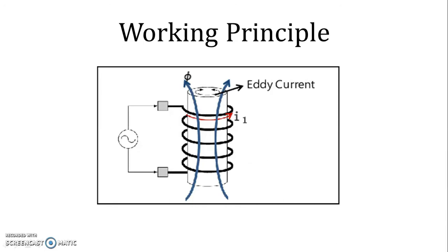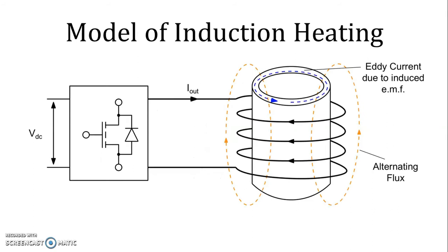Here we can easily understand the working principle. We are giving AC supply with very high frequency to the coil. Because current passes through the coil, magnetic field and fluxes are generated. Because of flux, EMF is induced in the charge, and since the charge is short circuited, eddy current passes through the metal. The eddy current loss is used for the heating treatment — for the surface heating of the metal. This is the model of induction heating.